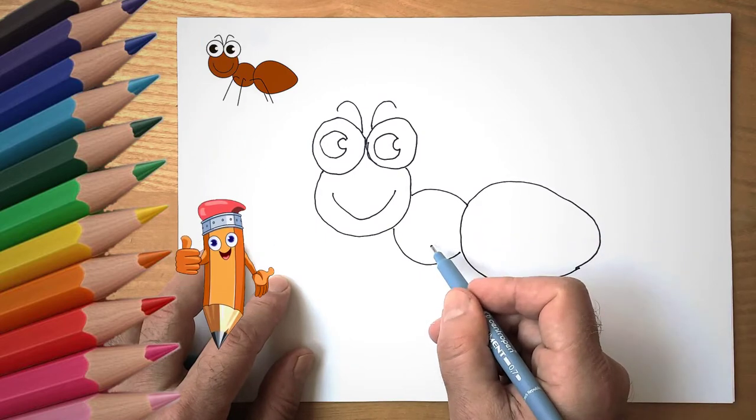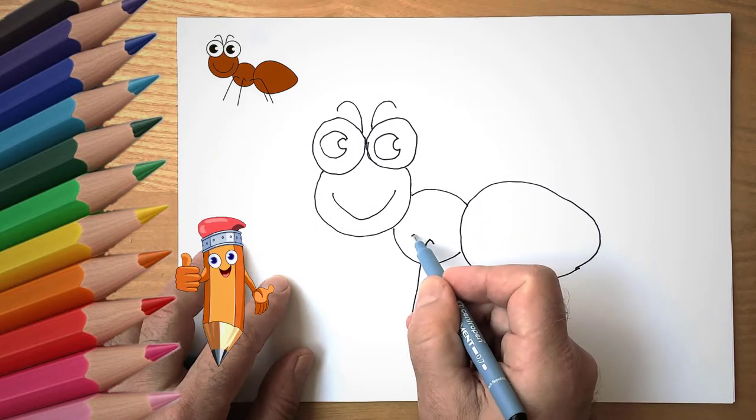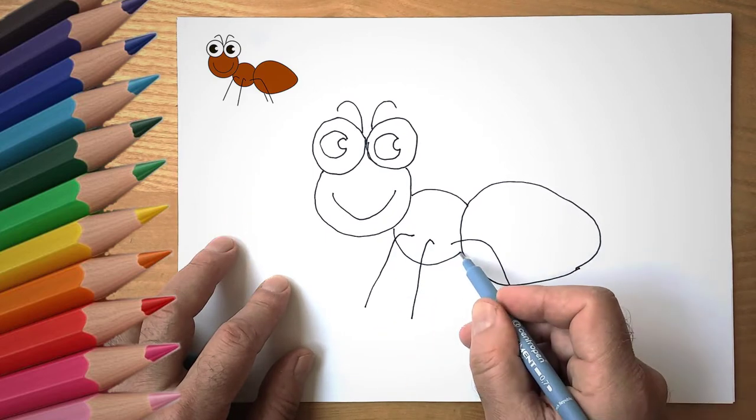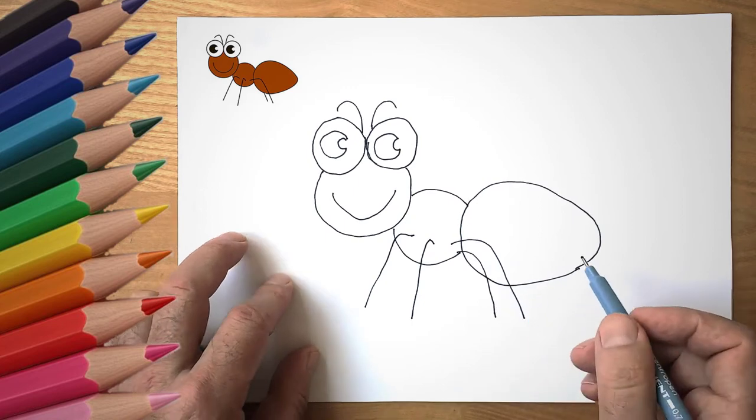Next, we draw another circle. It will be an ant's torso. We draw a large pointed oval. This is also the torso of our ant.